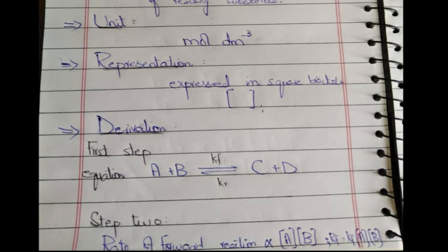Next is the representation. Active masses are always represented in units of mol dm⁻³. This is the unit used to represent active masses, and they are represented by square brackets. For example, if you take H₂, you put square brackets on both sides to show its molar concentration.